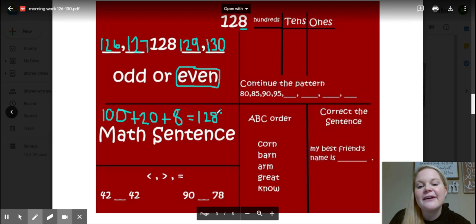We have our greater than, less than, equal to. What was it? Equal! That's right. 42 is equal to 42. And then we had 90 is greater than 78.